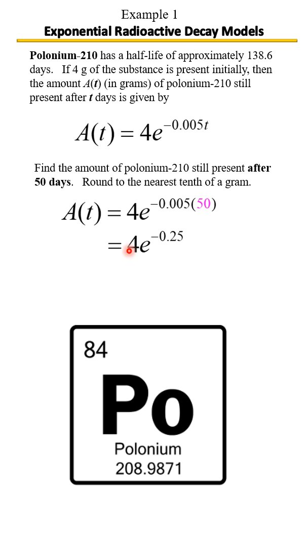Get that value. Then type in 4, and then E raised to the negative 0.25. And your calculator will give you the value of approximately 3.1 grams that will be remaining after 50 years.